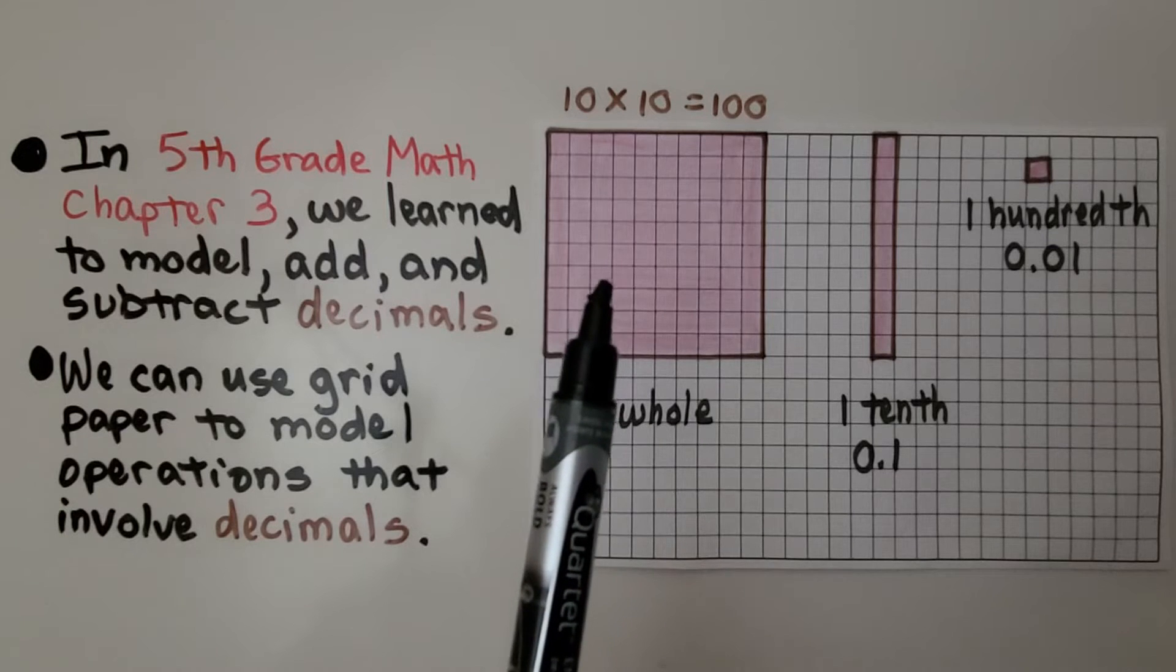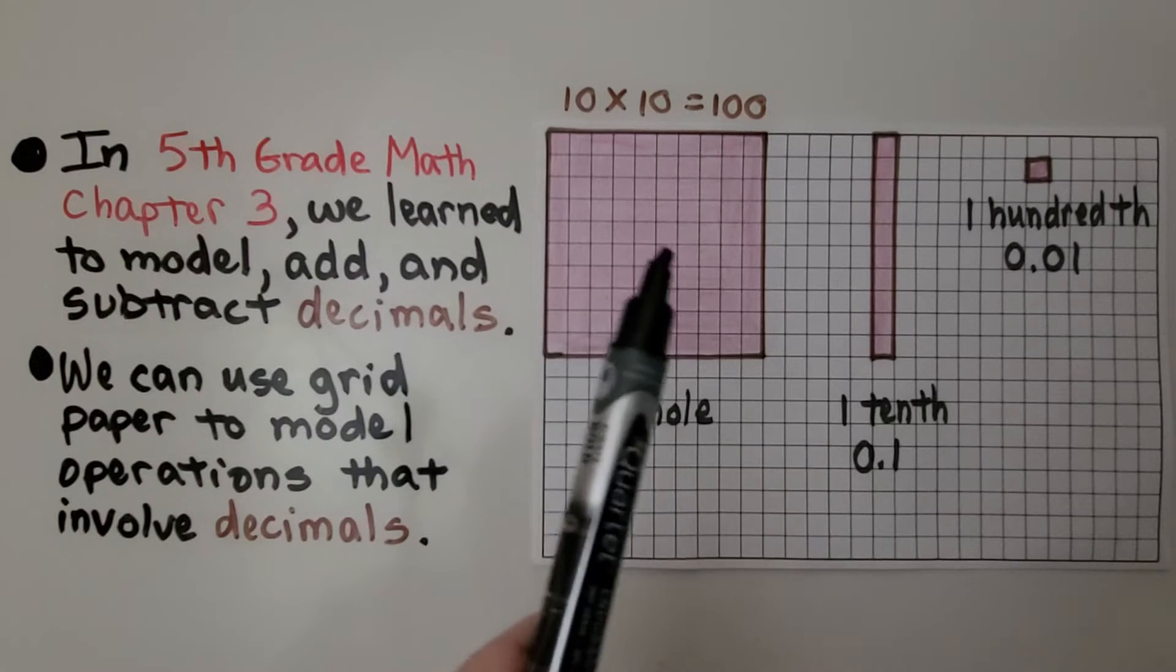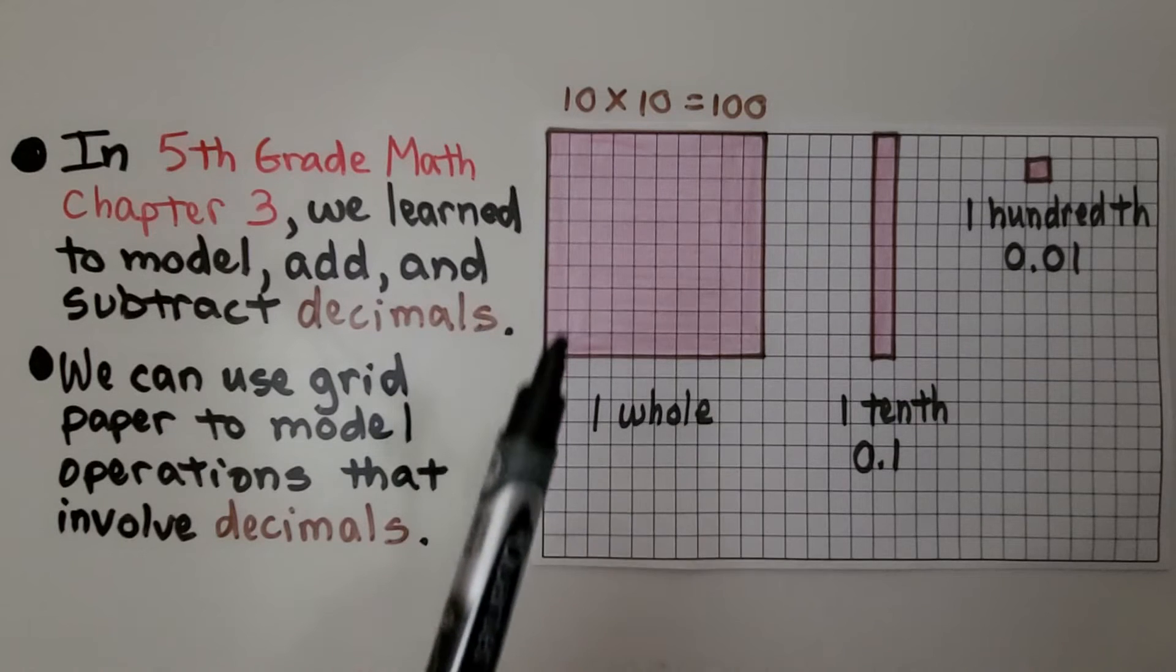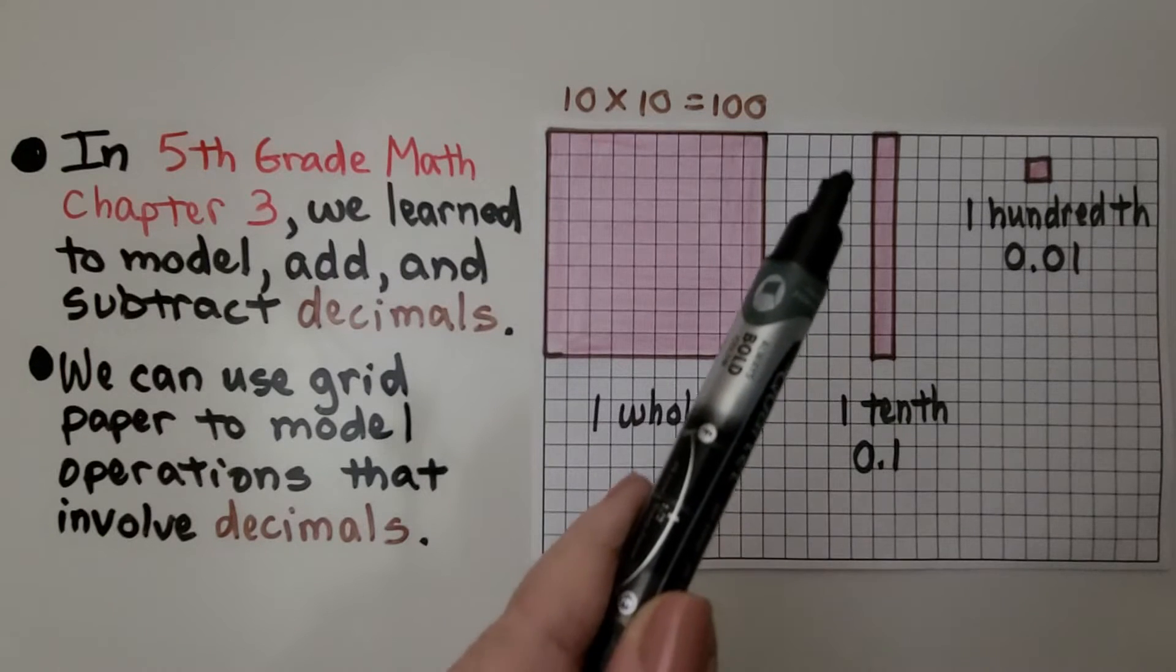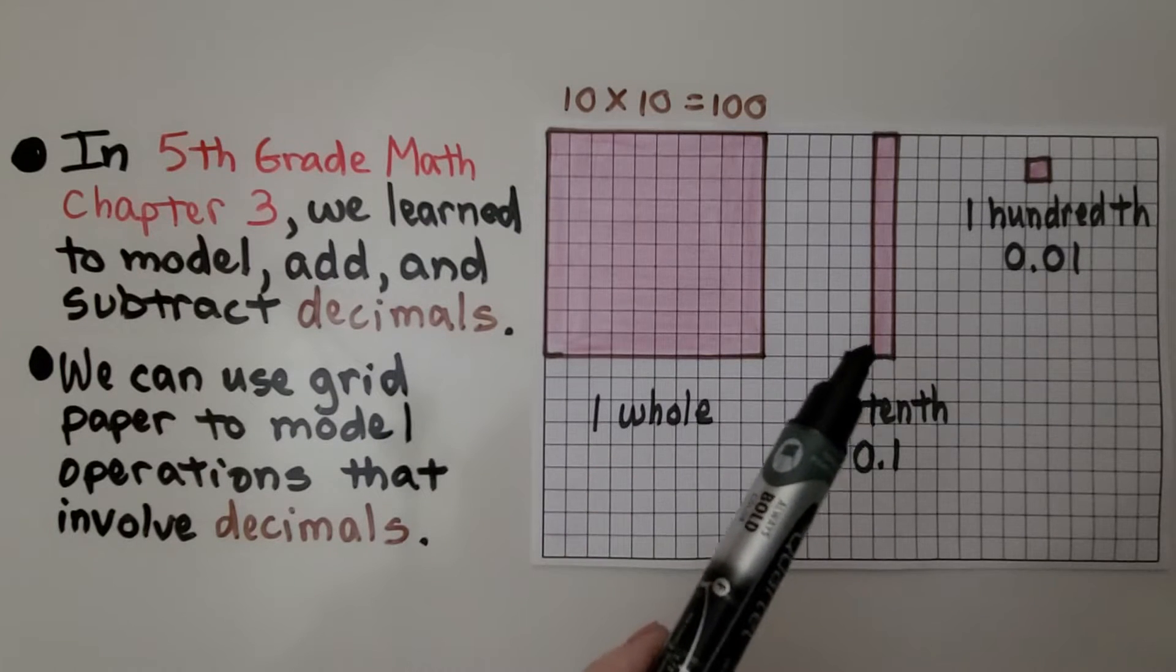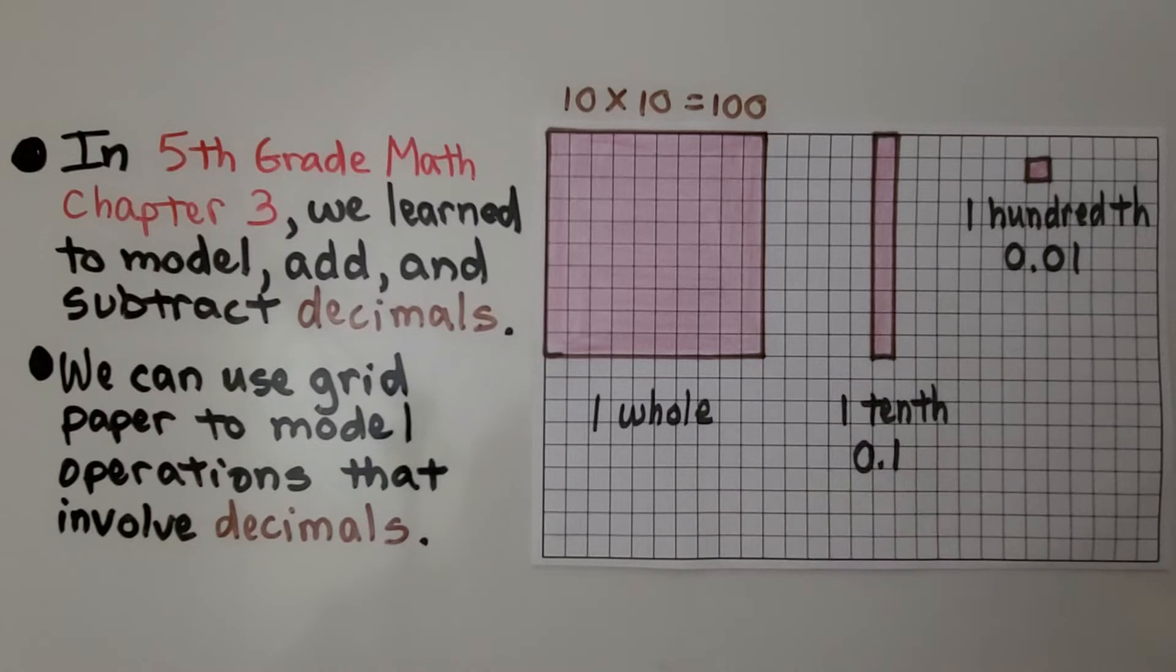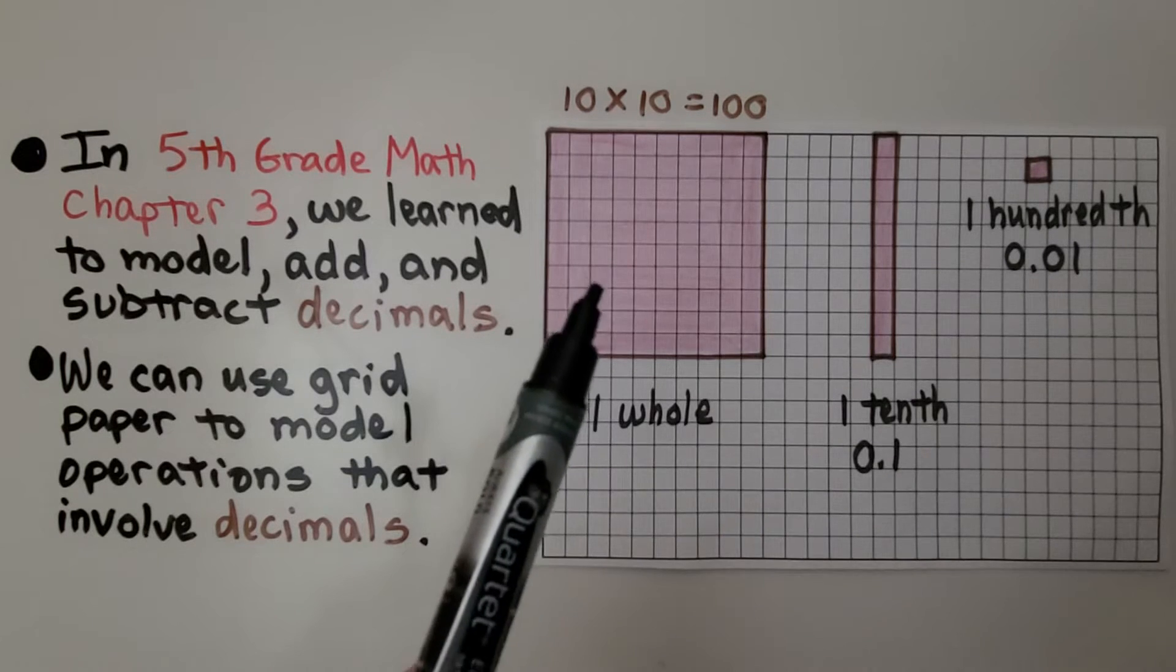We make one whole by making 100 little squares of 10 across and 10 down. We make a tenth by doing a column of 10, and one hundredth would be one little square of the one whole.